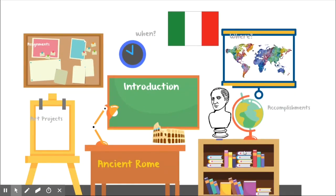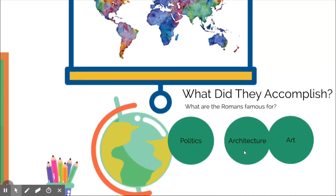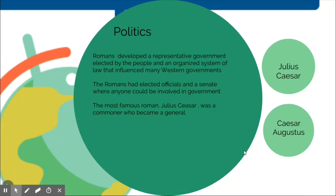Now let's talk about what the Romans accomplished. One thing already touched on is politics: they developed a representative government elected by the people and an organized system of law. The Romans had elected officials and a senate — that's where we get that word — where anyone could be involved in government.